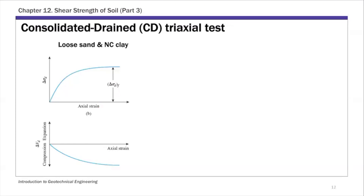This slide shows the results from a CD triaxial test. On the left-hand side, this is for loose sand and normally consolidated clay. The top plot shows delta sigma d, the deviator stress, versus axial strain. For loose sand, as you increase the axial strain, the deviator stress increases until the specimen fails — that's the deviator stress at failure, delta sigma df. The bottom plot shows volume change: as axial strain increases, the sample decreases in volume. That's compression.